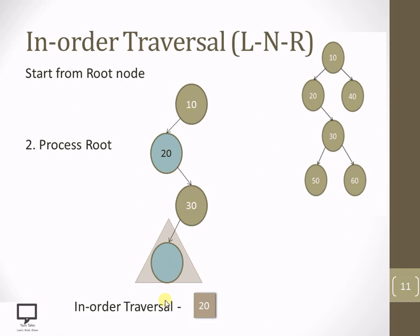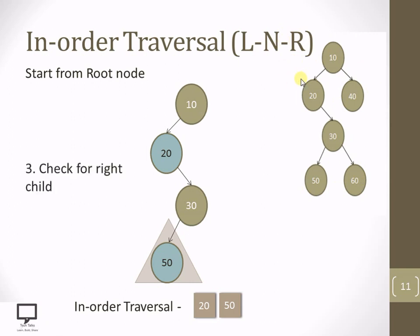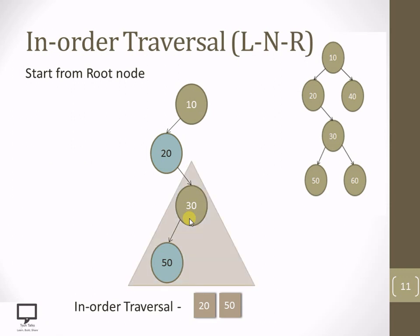Here, processing of the root node — I am changing the color of 50 and I am processing it. I am displaying 50. What will be the next step? To check for a right child. Here you can see that 50 is a leaf node, so the left child was not present and the right child is also not present. So we have done with 50 — left, root itself, and right child. Now what we need to do? We need to go back to 30 to make 30 the root node. Here you can see that again we are at the subtree where 30 is the root node.